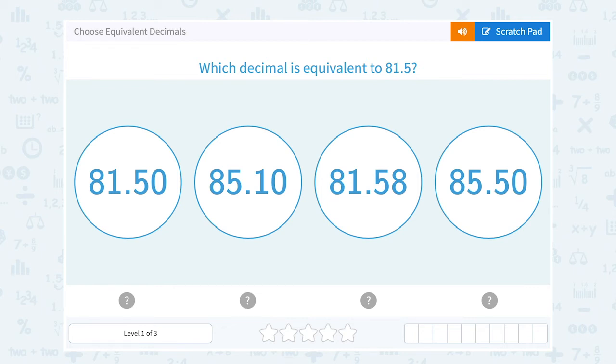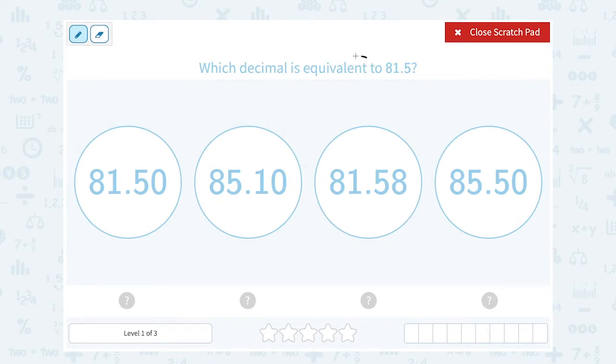Let's take a look at how to choose equivalent decimals. Which decimal is equivalent to 81.5? Well, that word equivalent means equal, so we're looking for something that has exactly the same value as 81.5.